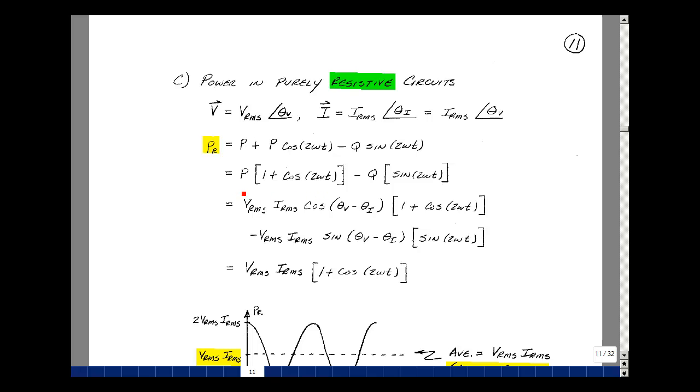Now, what is the real power? Well, it's the product of the voltage and the current in RMS times the cosine of the difference between the angle of the voltage and the angle of the current. And that's going to multiply then this term 1 plus cosine 2ωt. The value of q is the voltage times the current in RMS, but then times the sine of the angle between the voltage and the current.